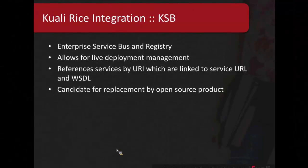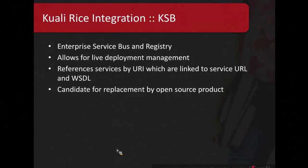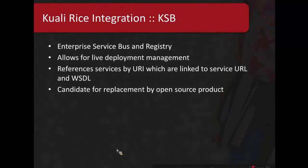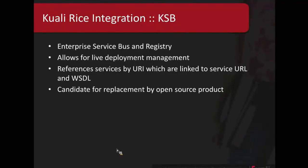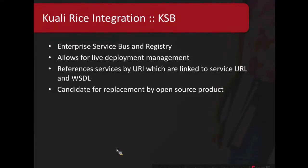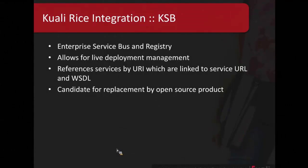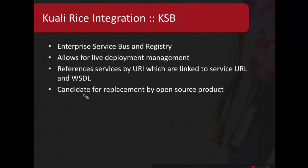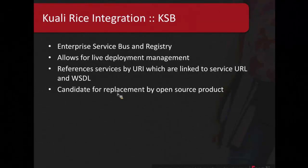The KSB is our service bus and registry. It allows for deployment management — you can actually take down or change the URL for a service. It allows for configuration of the service registries at application startup. We do a lot of Spring config to wire up our services into the service bus, and then we just reference them by a URI, which is linked to service URLs and labels. As mentioned, this is a candidate for replacement by open source products — the Rice team will be investigating that in probably the upcoming year.